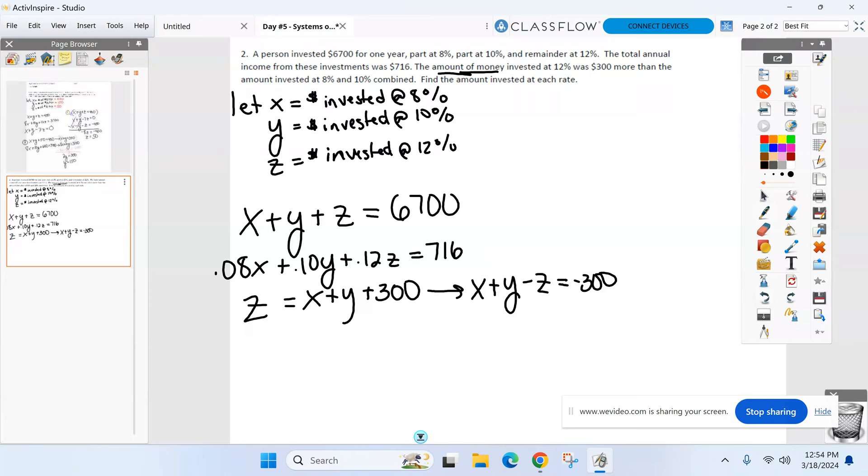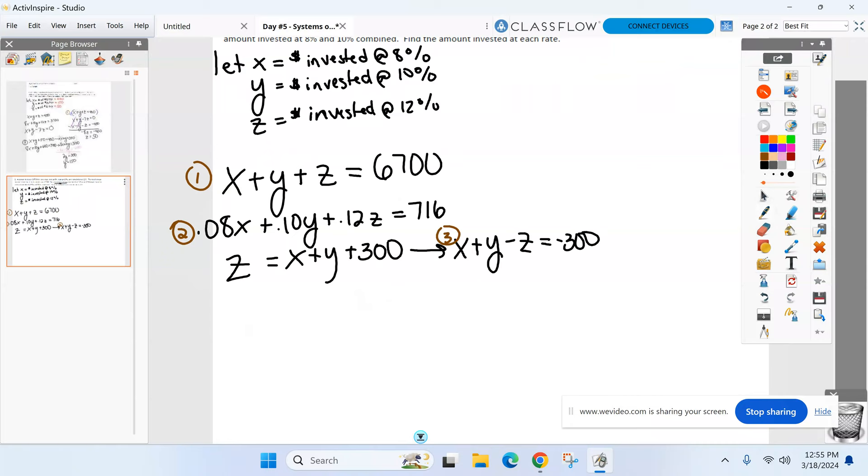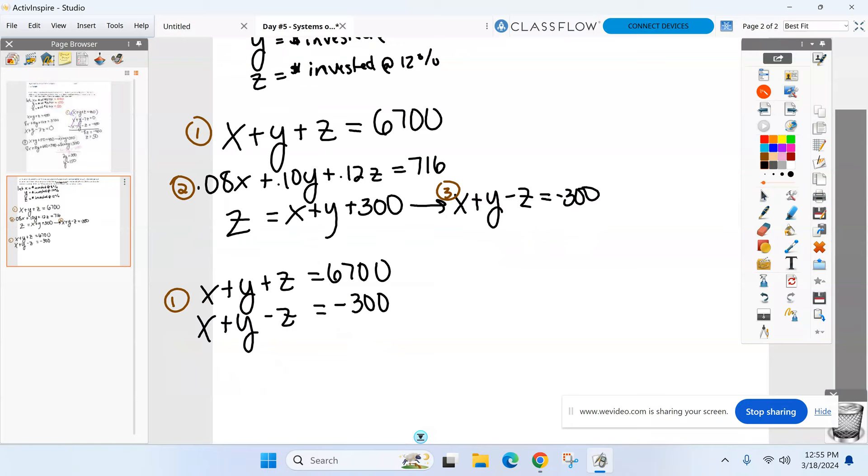Pick two equations right now, and we're going to eliminate a variable. First step. You guys are going to take the first and the third. Why take those? Because what happens? Z. See you later. I don't even need to multiply by a darn thing. Do we all see that? You could, but make sure you get 2Z in there. I'm not going to do that because I want to show what happens when two don't get eliminated. But yes. Ready, guys? How many X's do I have left? 2X and 2Y. Z's are gone. And what am I left with here? 6,400.